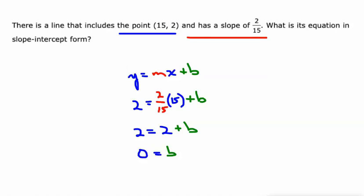And we end up with b equals 0. So our equation is y equals 2/15 times x plus 0.